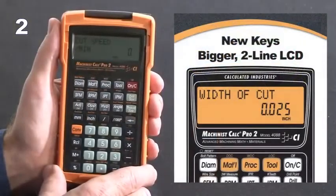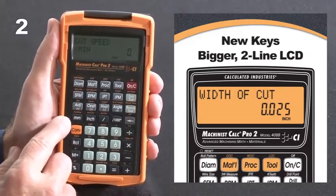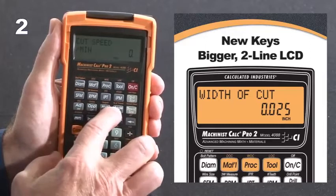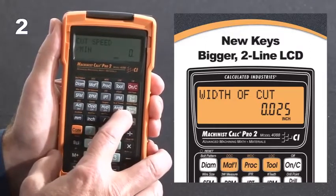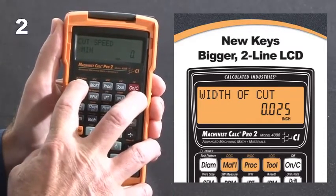Like our original Machinist Calc Pro, this one features all the dimensional and dimensional conversion keys, the right angle and trig function keys, the internal and external thread keys, the drill chart key, and the bolt pattern solutions key.